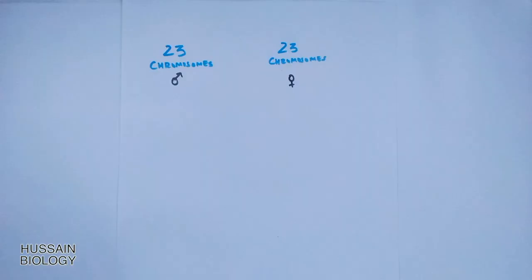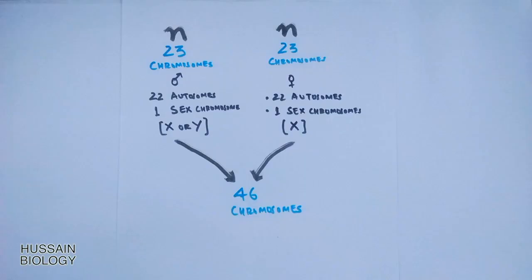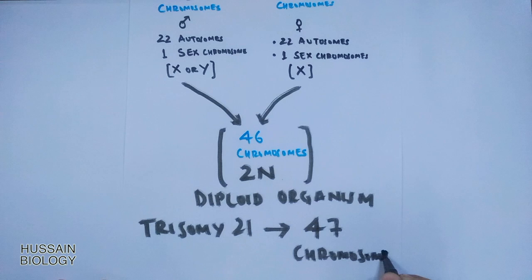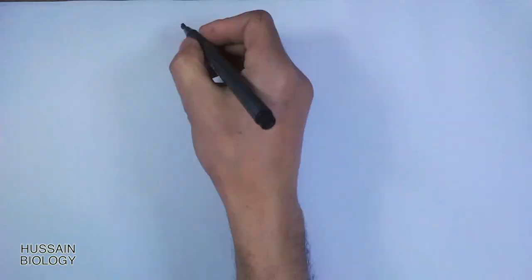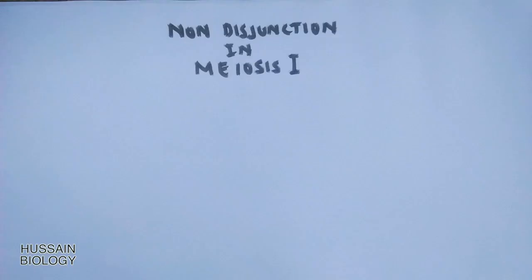Now let's see in detail how this non-disjunction occurs. We get 23 chromosomes from the father and 23 from the mother, giving a total of 46 chromosomes. Down syndrome occurs when either parent donates 24 chromosomes, giving 47 chromosomes total. To see how we get this extra chromosome, let's focus on meiotic non-disjunction that occurs during meiosis I, taking egg cell formation as an example.